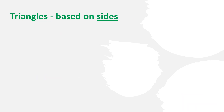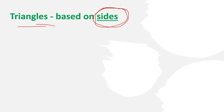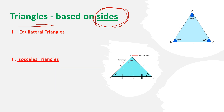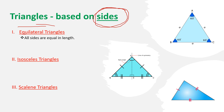Now let's understand triangle classification based on sides. We talked about angles — less than 90, equal to 90, more than 90. Now we classify based on the length of the sides. We can classify triangles into three types: equilateral triangle, isosceles triangle, and scalene triangle.